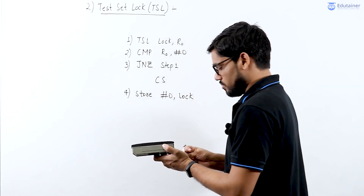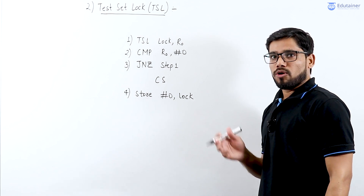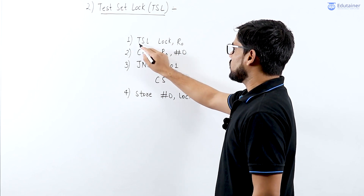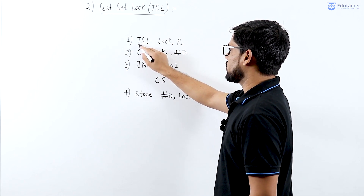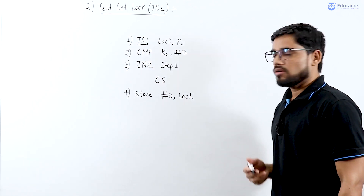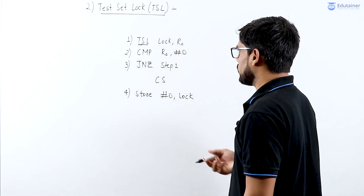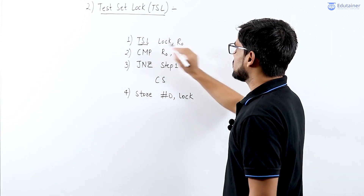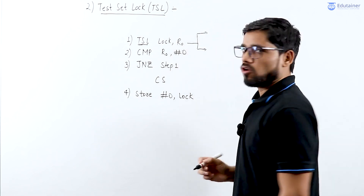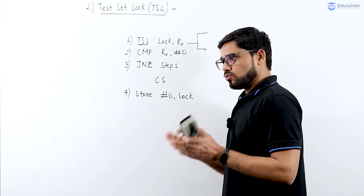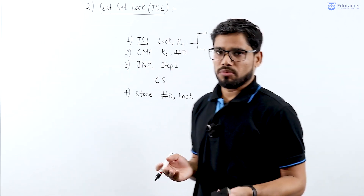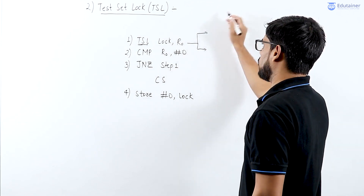In TSL, we use a special assembly instruction called Test-Set Lock. TSL represents a special assembly instruction provided by the hardware of a particular computer, and it is an atomic operation. It combines two different operations of the lock variable into one atomic operation.